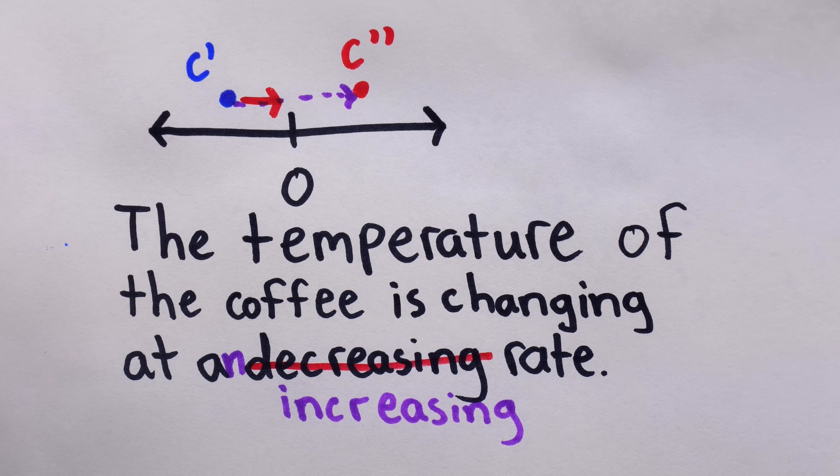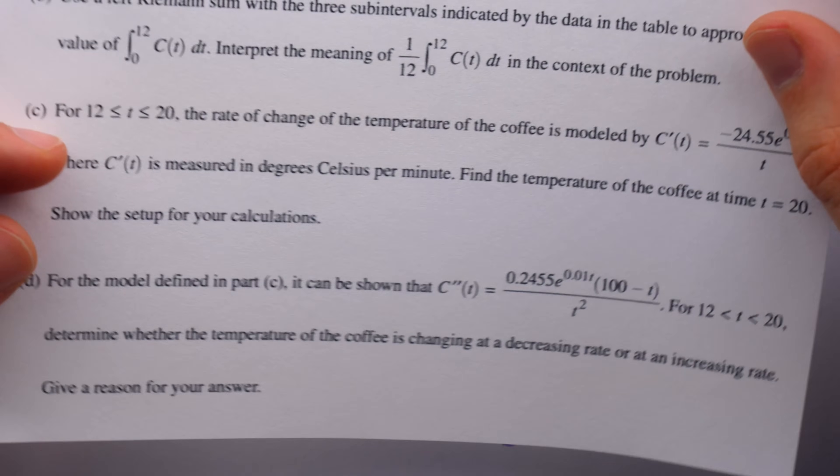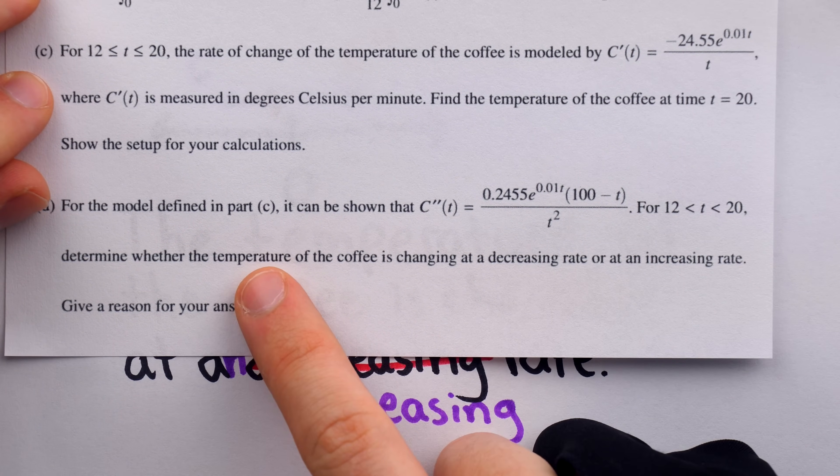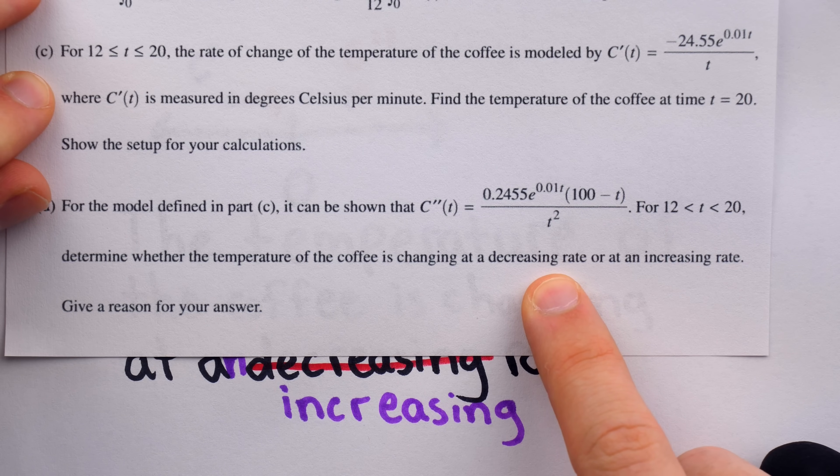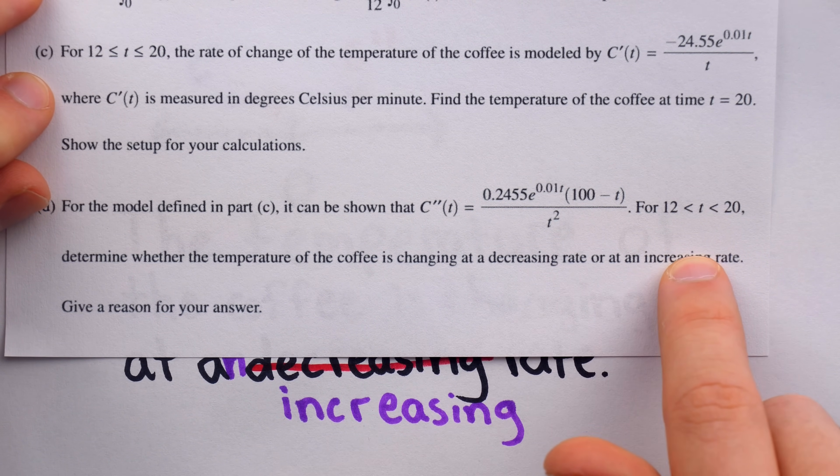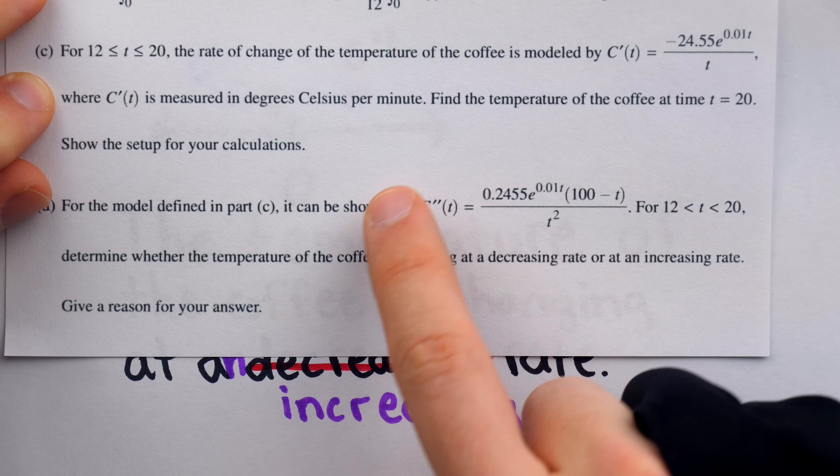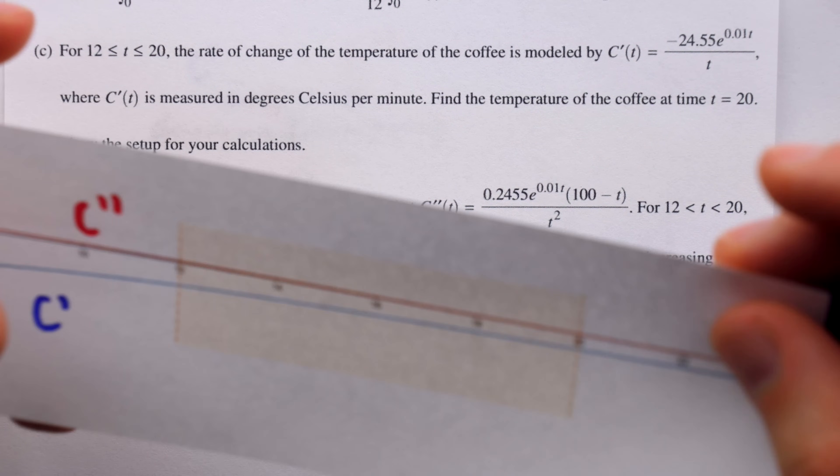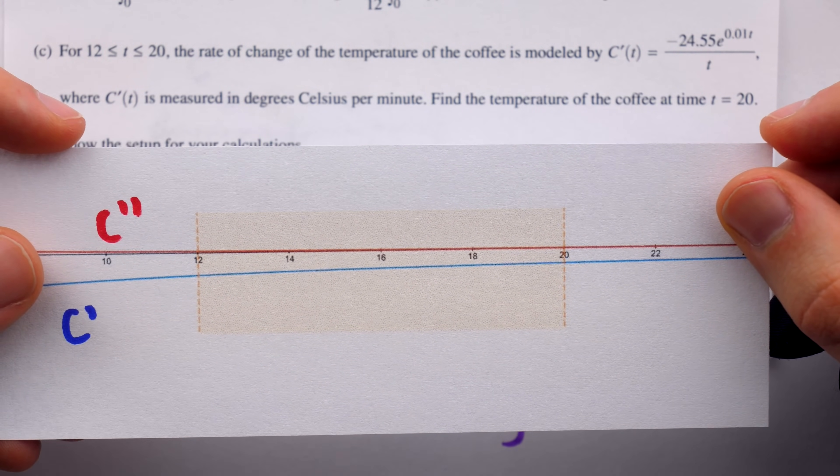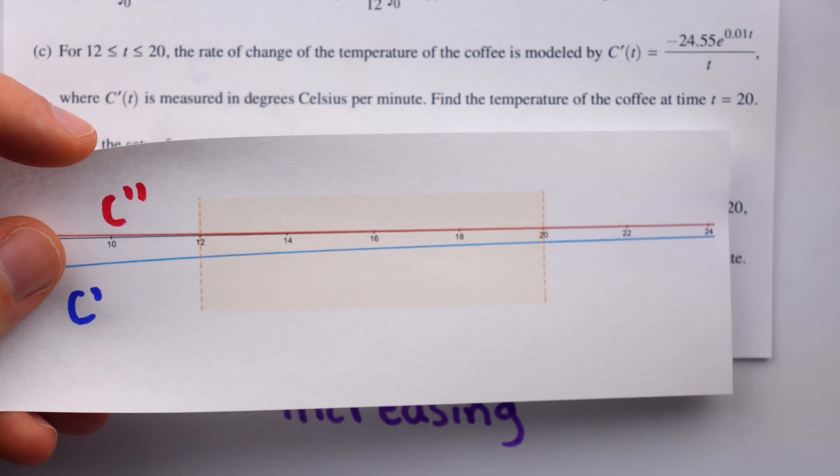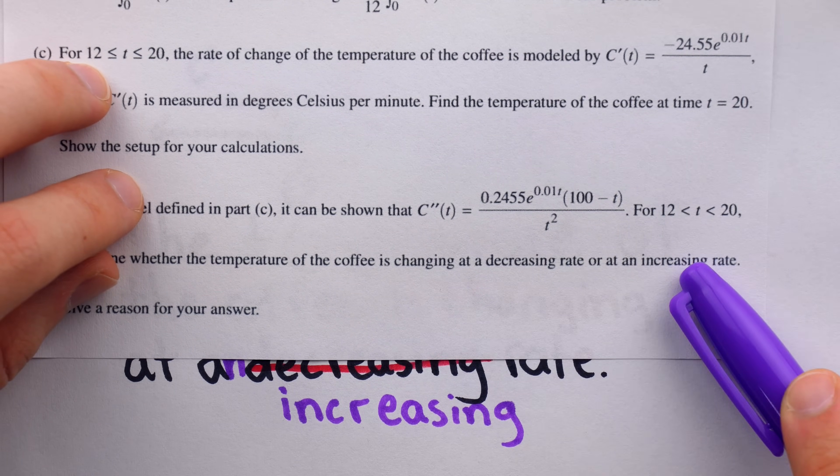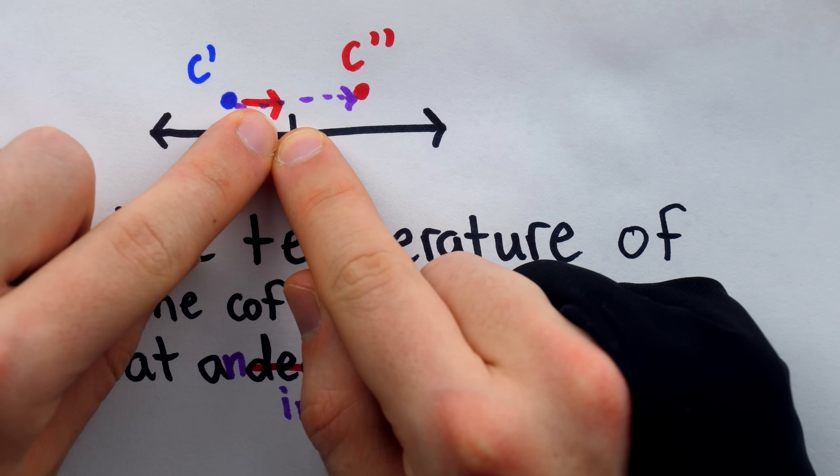The question doesn't ask us about the magnitude of the changes. Is it changing more drastically or less drastically? It just asks us to determine whether the temperature of the coffee is changing at a decreasing rate or an increasing rate. This can only be answered by appealing to the sign of the second derivative. Because the second derivative is positive over the interval of interest, which you would see when you graph the functions, that means that the derivative is increasing and so indeed the temperature is changing at an increasing rate. The rate is going from negative to less negative.